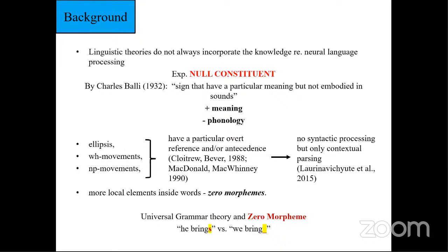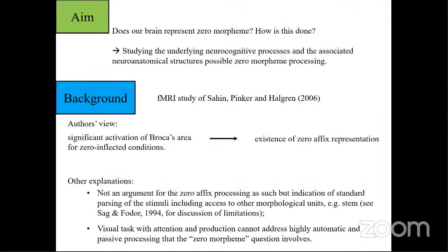Universal grammar says that there is an overt marker for a singular number on the verb, and in this case they postulate the existence of the same but covert one for the plural number marking. So in this case it will be zero morphemes, and the question is whether our brain represents zero morphemes and how it is done.